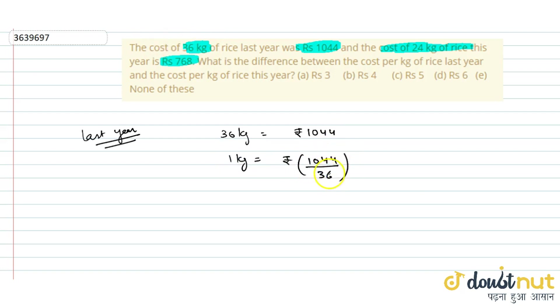If we divide by 6, that is 1,044 divided by 6, which equals 174, and 36 divided by 6 is 6. So 174 divided by 6 equals Rs. 29. The cost per kg of rice last year is Rs. 29.